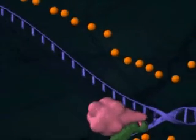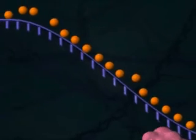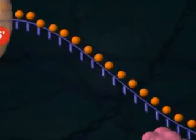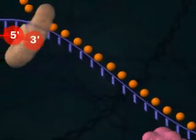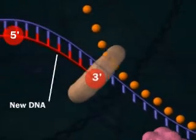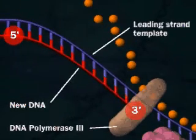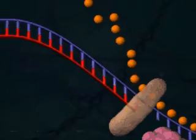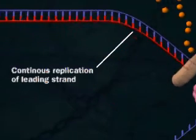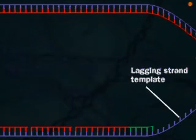One DNA strand encodes the leading strand, which forms from its 5' to its 3' end using DNA polymerase III. No problem here, but the lagging strand presents problems.